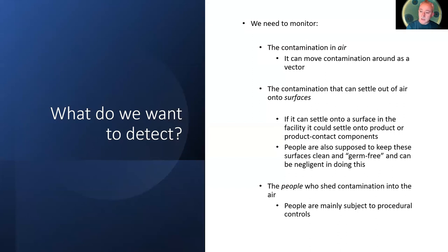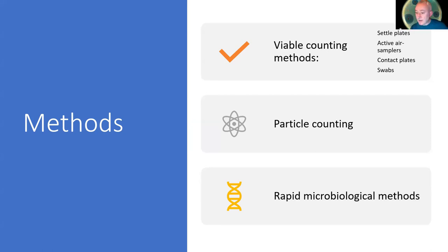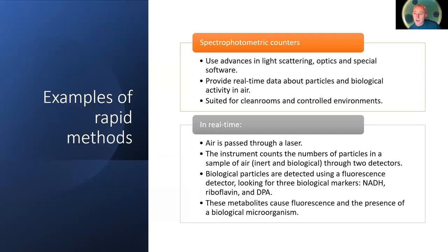We also need to assess contamination on surfaces through the use of contact plates and swabs, and also undertake personnel monitoring. The classic monitoring techniques include settle plates, active or volumetric air samplers, contact plates, swabs, and particle counters which assess the overall numbers of particles in the air. There are also various rapid microbiological monitoring methods emerging, ranging from bioluminescent swabs to spectrophotometric counters.